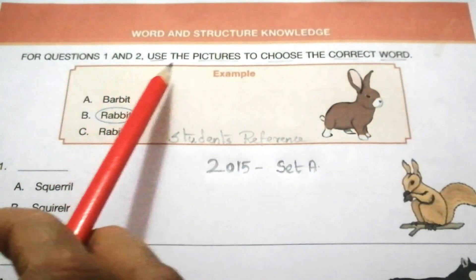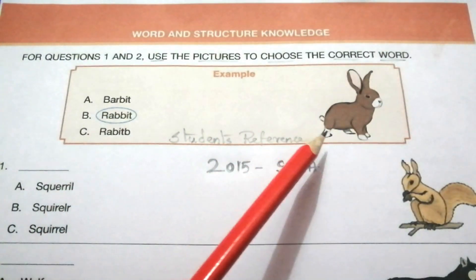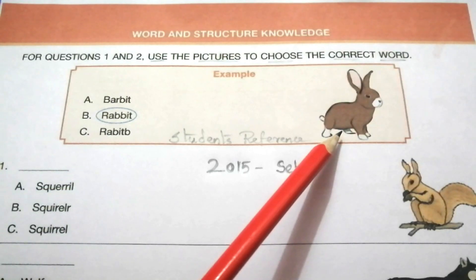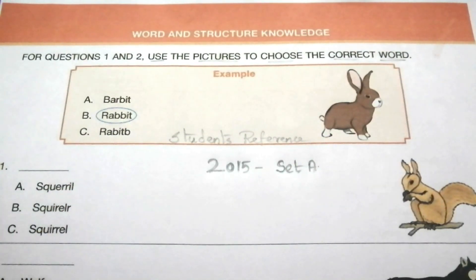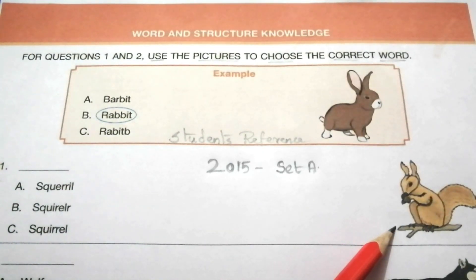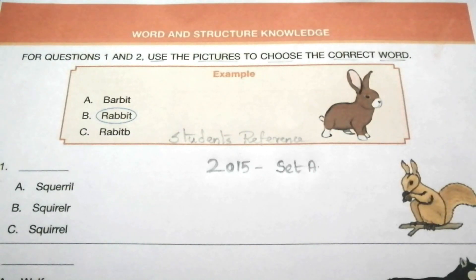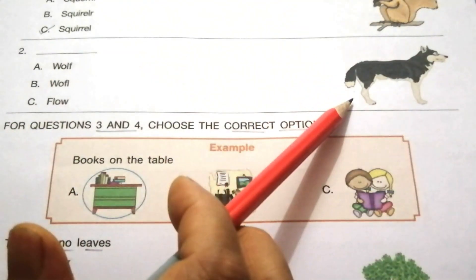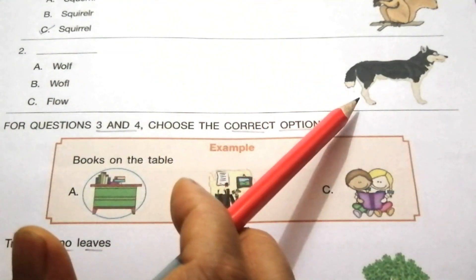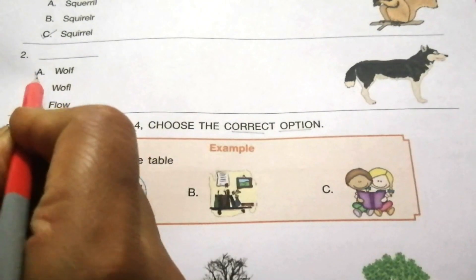For questions 1 and 2, use the pictures to choose the correct word. Question 1: the given picture is a squirrel. Read the given options and find the correct spelling. The answer is C — squirrel. Question 2: look at the given picture. This is a wolf. The answer is A — wolf.